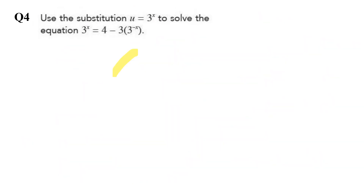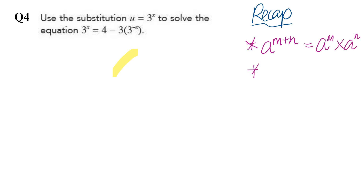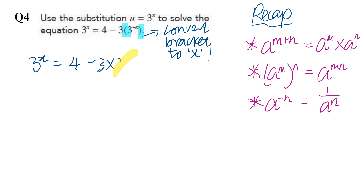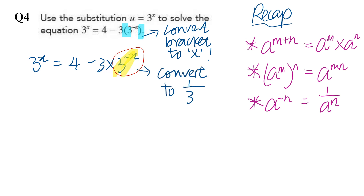Now let's look at Question 4. First, let's write down the three important rules we'll be using. We change the bracket to the multiplication symbol. Then we convert the negative index to a positive one using the third rule, giving us one over three to the power of x.